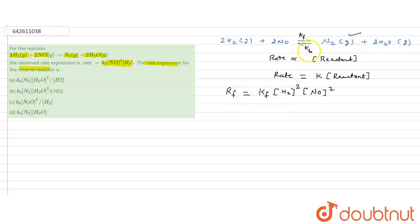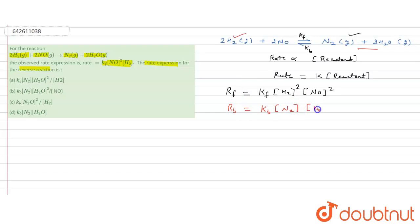For the backward reaction, the reactant side becomes N2 and H2O. So the backward rate expression is: rate = kb into concentration of N2 into concentration of H2O squared. At equilibrium, the rate of the forward reaction equals the rate of the backward reaction.